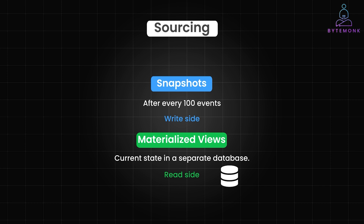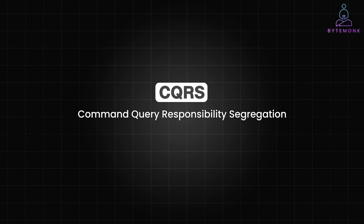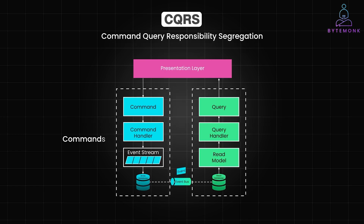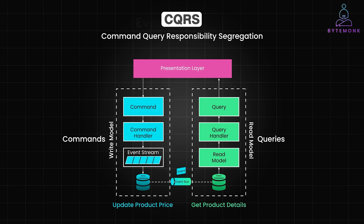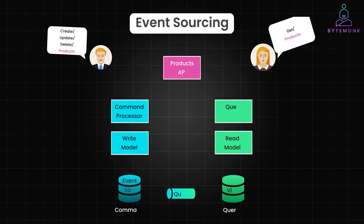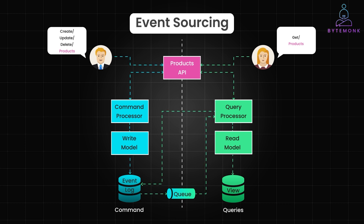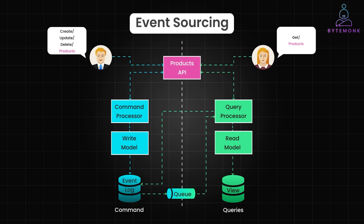CQRS, or Command Query Responsibility Segregation, separates the responsibility of handling commands from queries. The command side, or write model, handles all actions that change the state — for example, updating a product price. The query side, or read model, handles all the actions that retrieve data — for example, get product details. Event sourcing stores every change that happens, be it product created, price updated, etc., as an event, and the current state is derived by replaying these events.